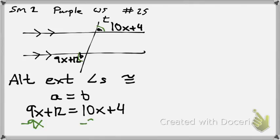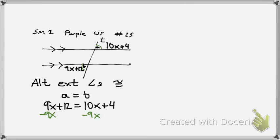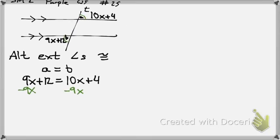But, algebra, if I do it to one side, I have to do it to the other side. And so now that would give me 12 equals 1x plus 4. Now what do I do? Subtract the 4. So that would give me 8 equals x.